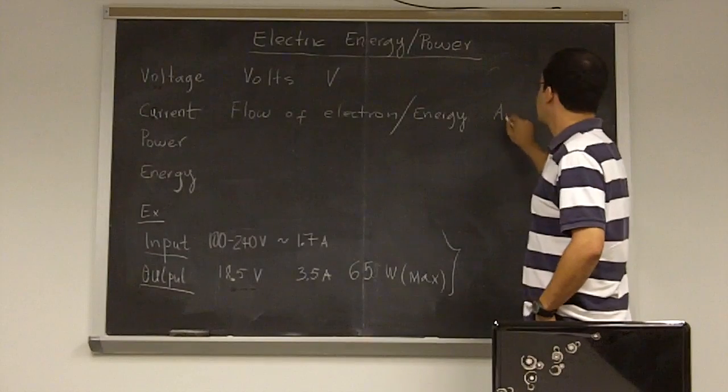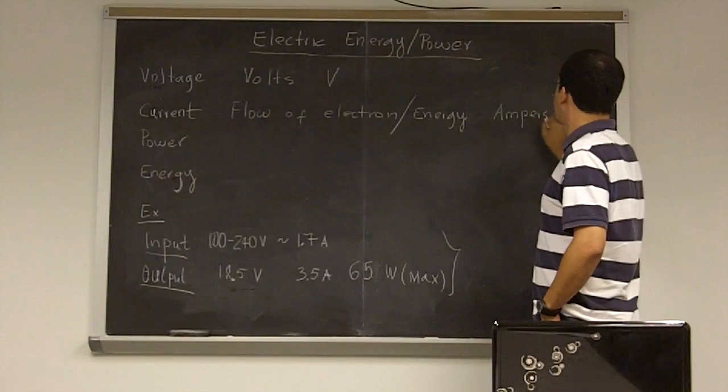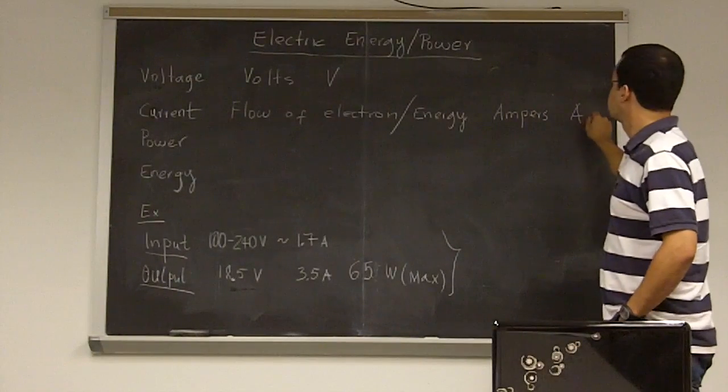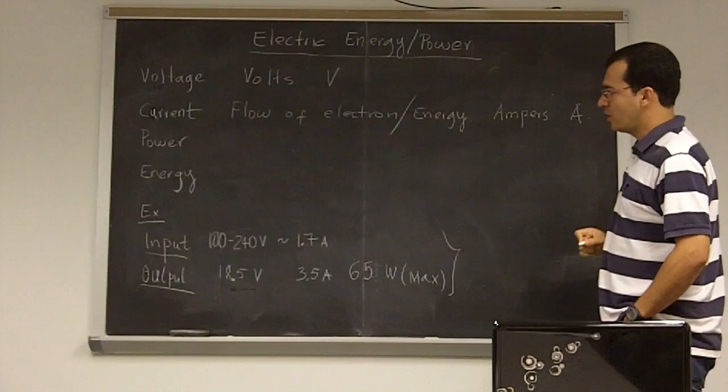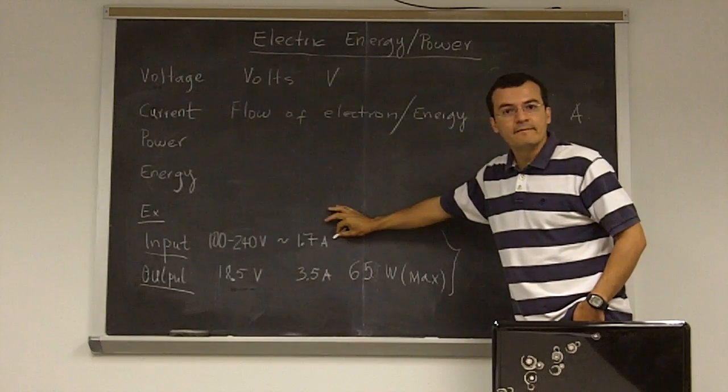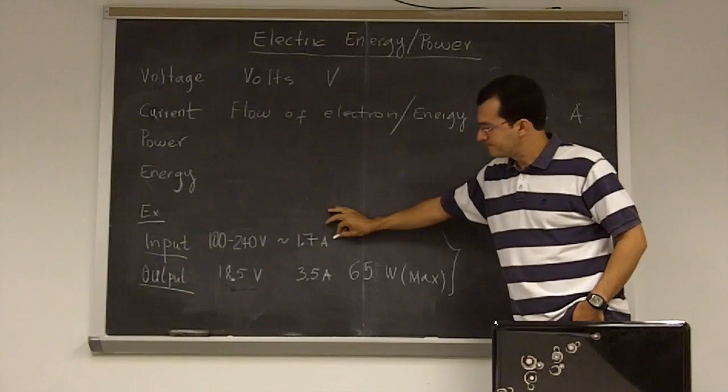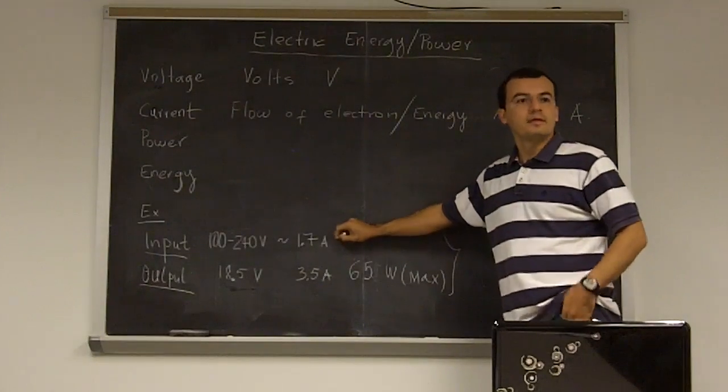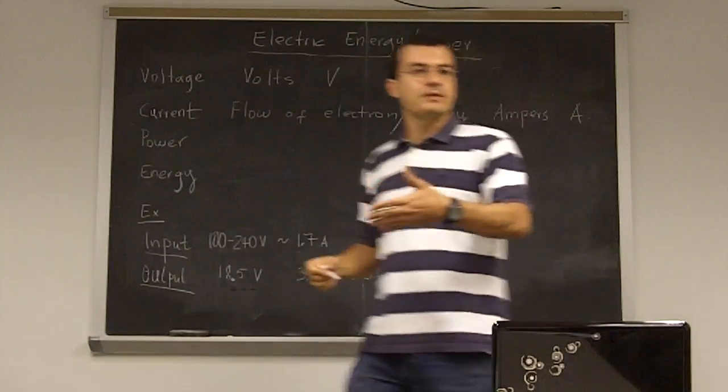And as you probably know, electrons are the basic charge carrier and is the basic agent to transport energy or to transfer energy from one point to another. Or basically what it means is the flow of electrons. The units are amperes and the symbol is A. Okay. So what can you tell from this example?